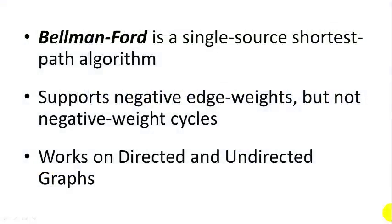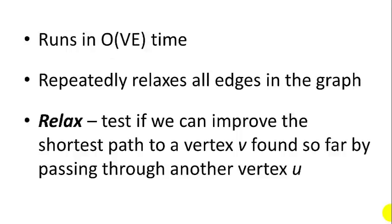Hi, I'm Joe James, and this video is going to cover the Bellman-Ford algorithm, which finds the shortest path to every vertex in a graph from a single source. Bellman-Ford supports negative edge weights, but it does not support negative weight cycles. It works on both directed and undirected graphs. Bellman-Ford runs in big O of VE time, which means the number of vertices times the number of edges in the graph. It works by repeatedly relaxing all the edges in the graph — testing if we can improve the best path found to a vertex so far by passing through another vertex.